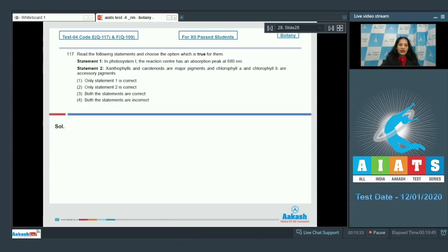Question number 117: Read the following statements and choose the option which is true for them. Statement 1: In photosystem 1, the reaction center has an absorption peak at 680 nanometers. No, in PS1 the absorption peak is at 700 nanometers, so this is incorrect.